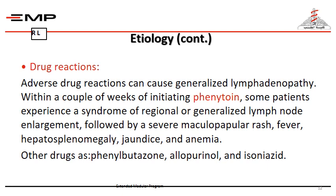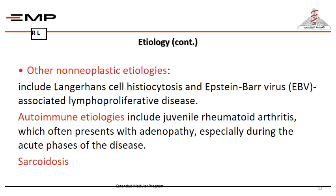Sometimes generalized lymphadenopathy is due to a drug reaction. The most common drug known to cause generalized lymphadenopathy is phenytoin. Some patients experience generalized lymphadenopathy followed by a severe maculopapular rash, fever, hepatosplenomegaly, jaundice, and anemia. Other drugs include allopurinol, used in the treatment of gout, and INH (isoniazid), used in the treatment of tuberculosis.